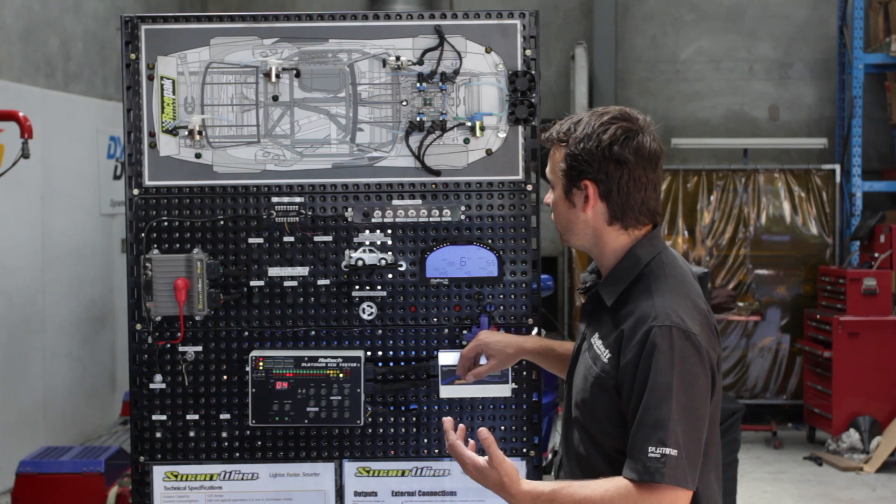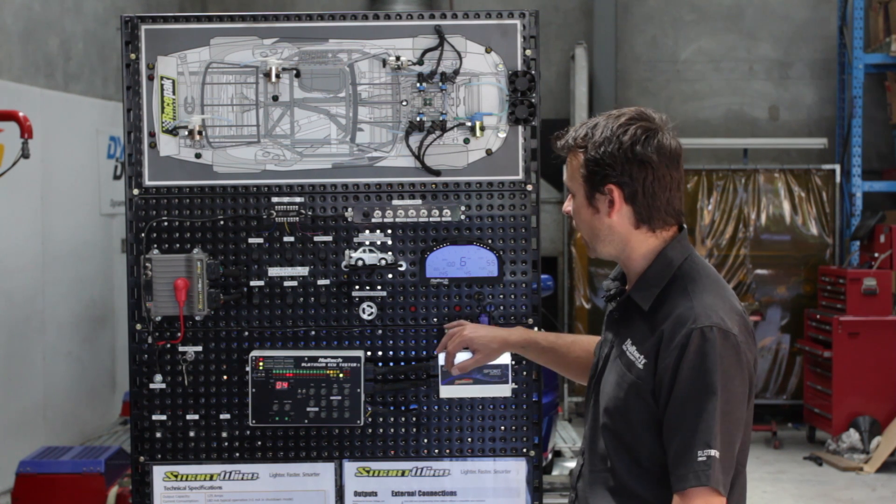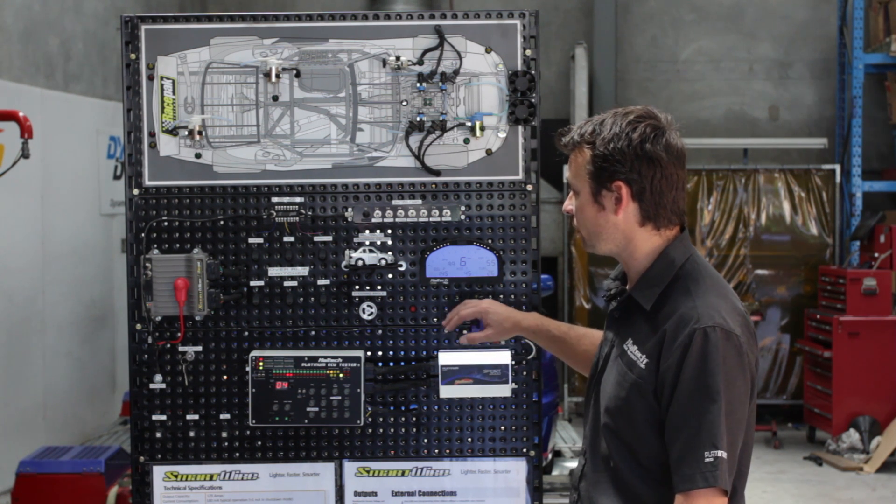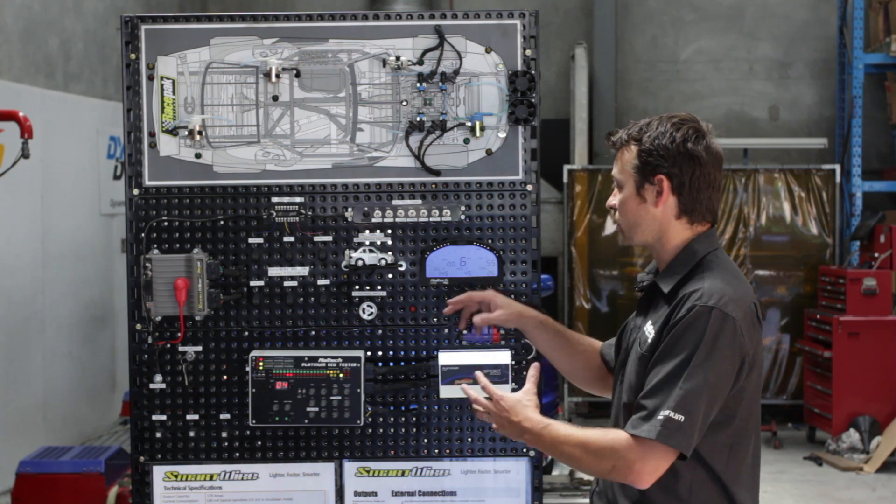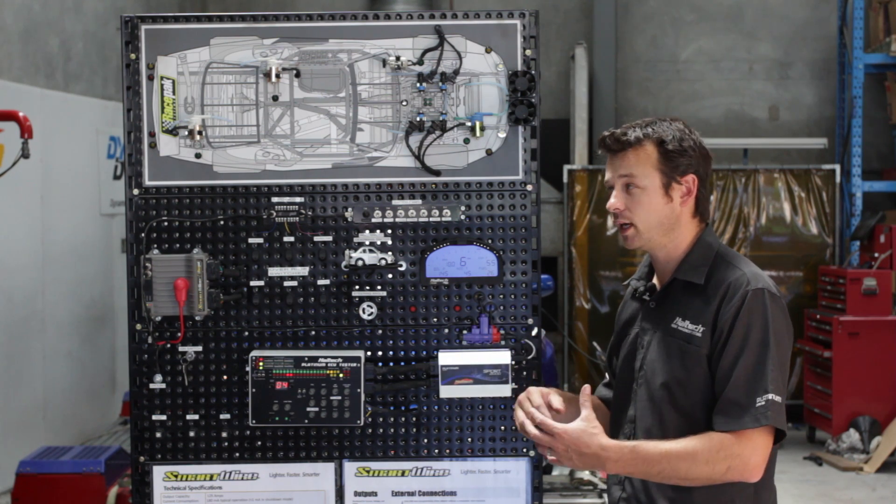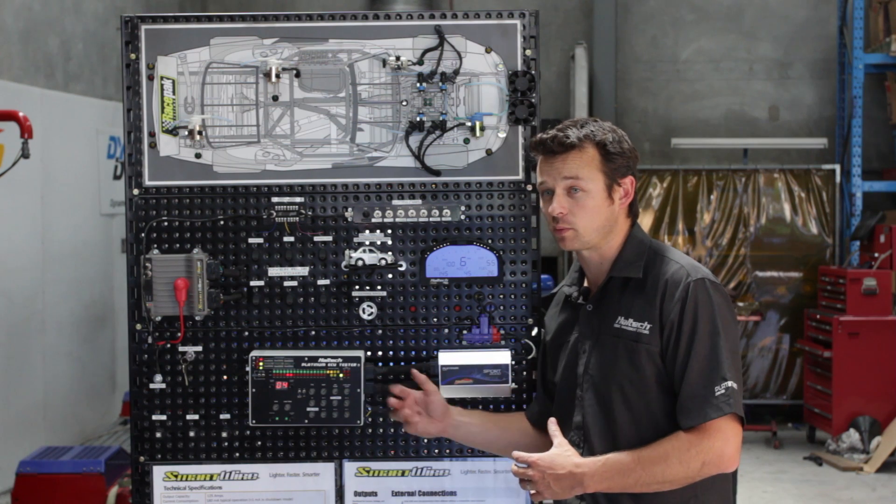We can show for example the amount of voltage that's being sent out to the fuel pump or maybe a gearbox pump or a fan or a water pump. We can display information like RPM and gear like you normally can, or you can display a fault condition. Say for example one of the circuits stops working.